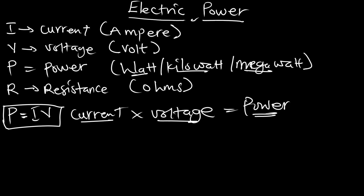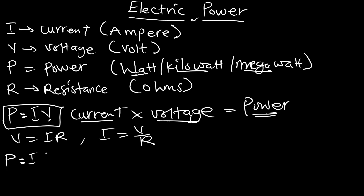We also know that V is equal to IR, and from that, I is equal to V over R. We can substitute into P = IV: replacing V with IR gives us P = I²R. This is also used to calculate electric power.